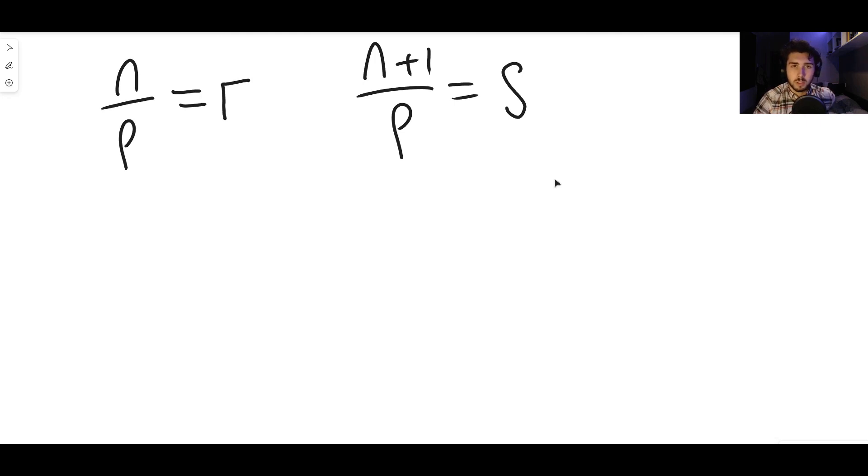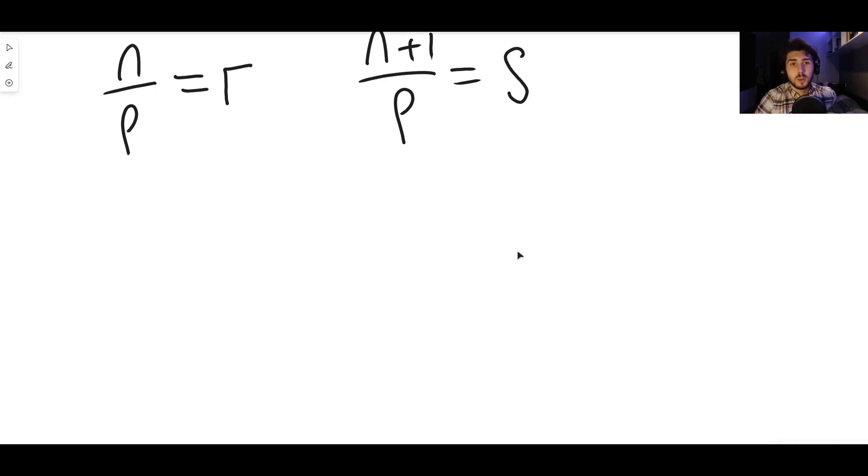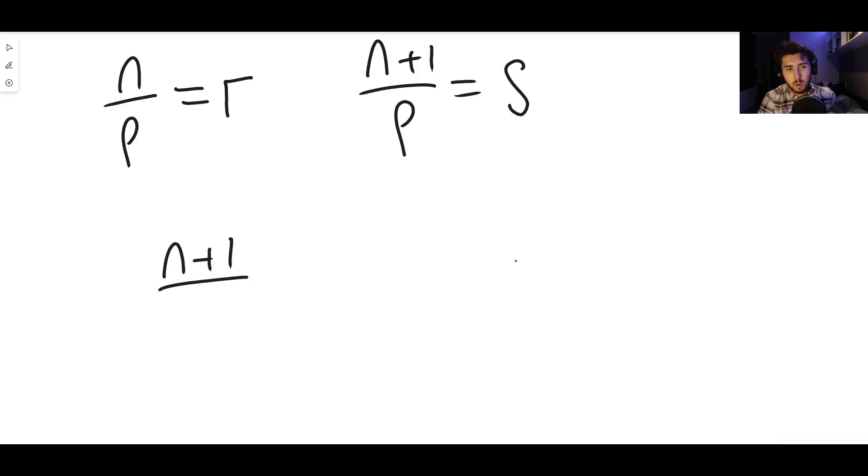This is the great thing about integers. Integers are closed under addition and subtraction, which means you cannot have one integer plus another and make a number that is not an integer. You can't have one integer subtract another and make a number that is not an integer. So what it means is we can do something very clever. We can take away r and s. So I'm going to do (n+1)/p minus n/p. This should be an integer. I'm going to call this integer k.